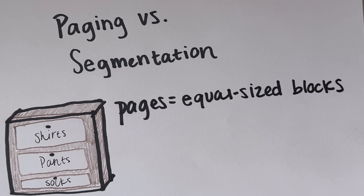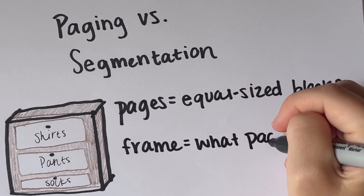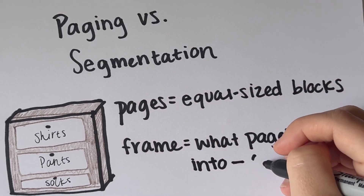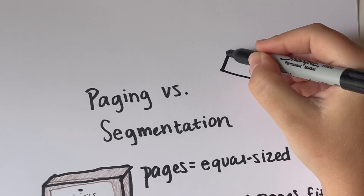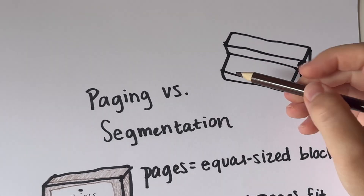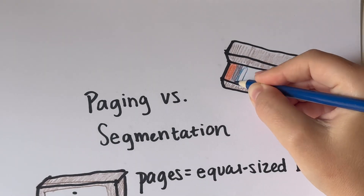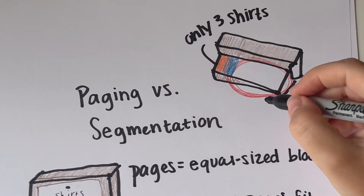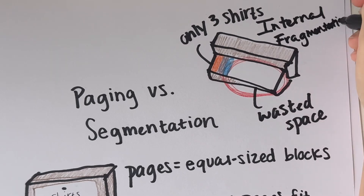Memory is split into equal-sized blocks called pages. Each page fits neatly into a drawer in physical memory called a frame. It's neat, tidy, and predictable. But not always efficient — if your socks only fill half the drawer, the rest is wasted. That's internal fragmentation.